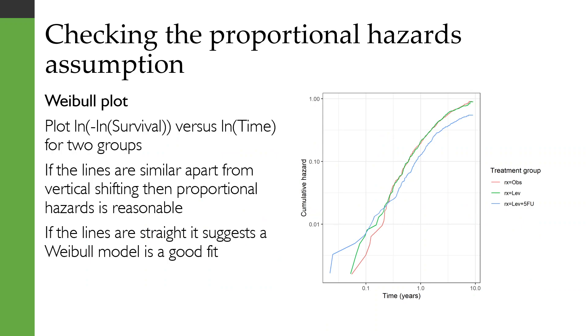One of them is to use something called a Weibull plot. In a Weibull plot, we plot on the y-axis the cumulative hazard on a log scale. So if you want to calculate it from the survival data, you take the log of the survival, then you take the negative of that, and then you take the log a second time. On the x-axis we plot time, but again it's on a log scale.